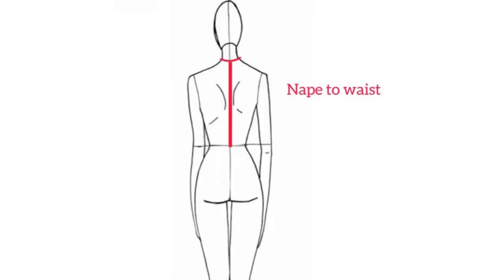The next measurement we need is the nape to waist. The nape to waist is taken from the prominent bone at the back of your neck — place your head downwards and allow your chin to touch your chest, and you'll feel that prominent bone. Take the measurement from that prominent bone to your waist. You can use this measurement to estimate your back waist length: for small to medium sizes, add three quarter of an inch to your nape to waist measurement. For larger sizes, add one inch.